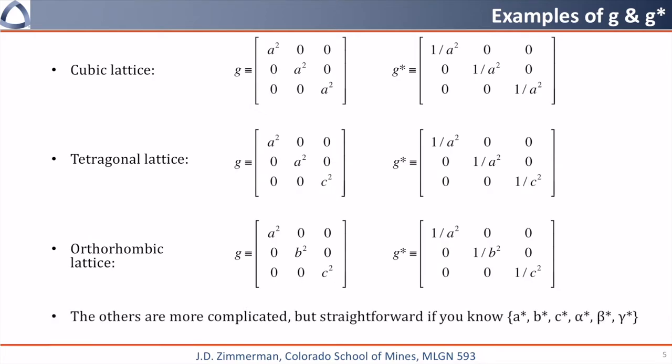Systems with non-90 degree angles are more complicated, but if you know the quantities a-star, b-star, c-star, alpha star, beta star, gamma star, it is relatively straightforward to build the reciprocal metric tensor from the equation on the previous slide.